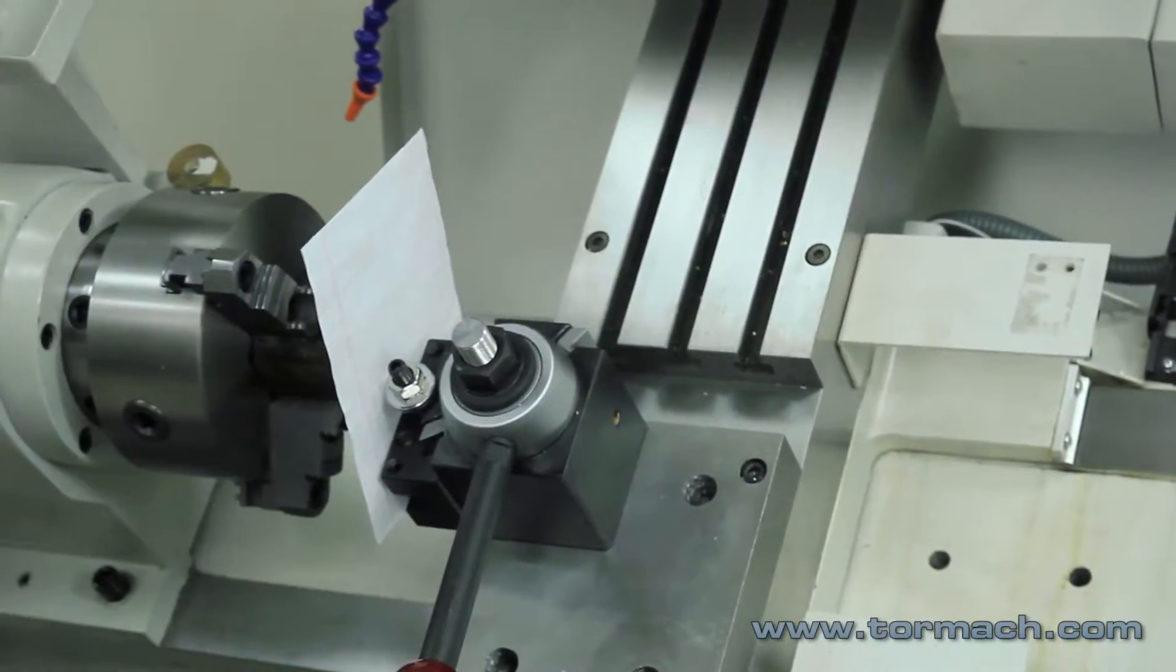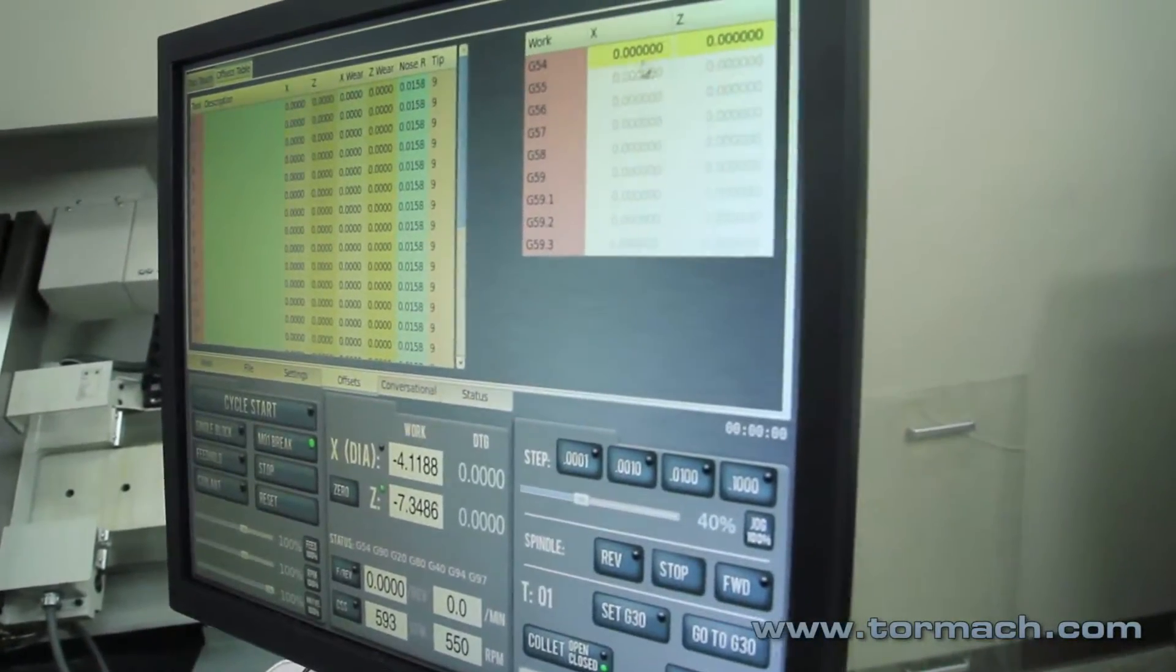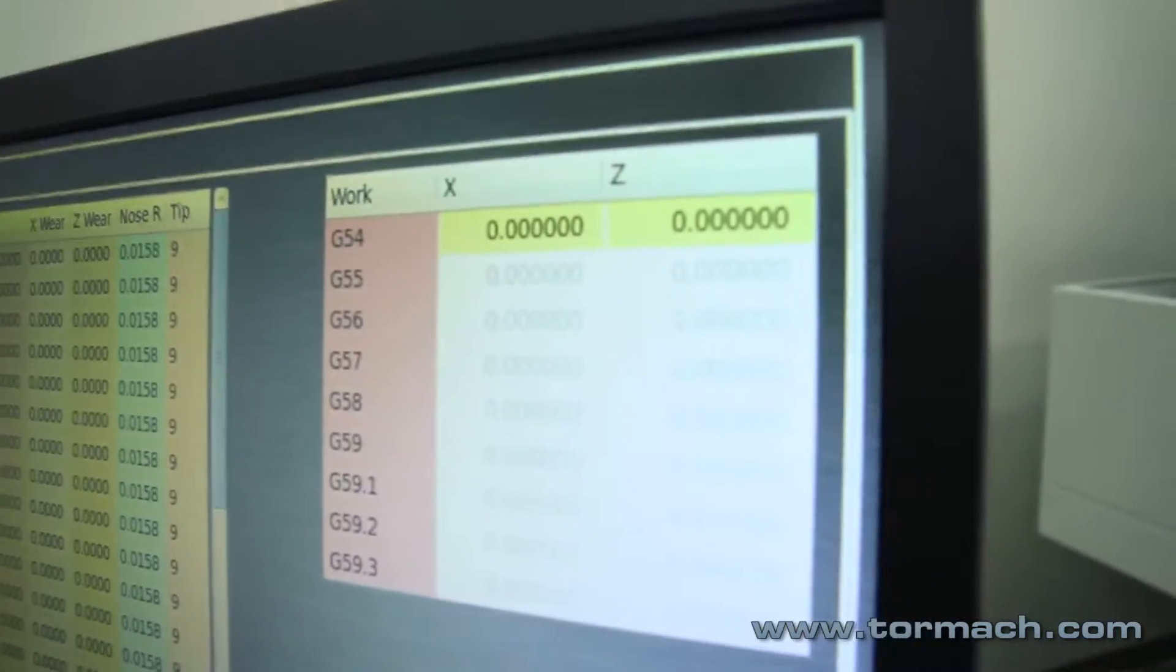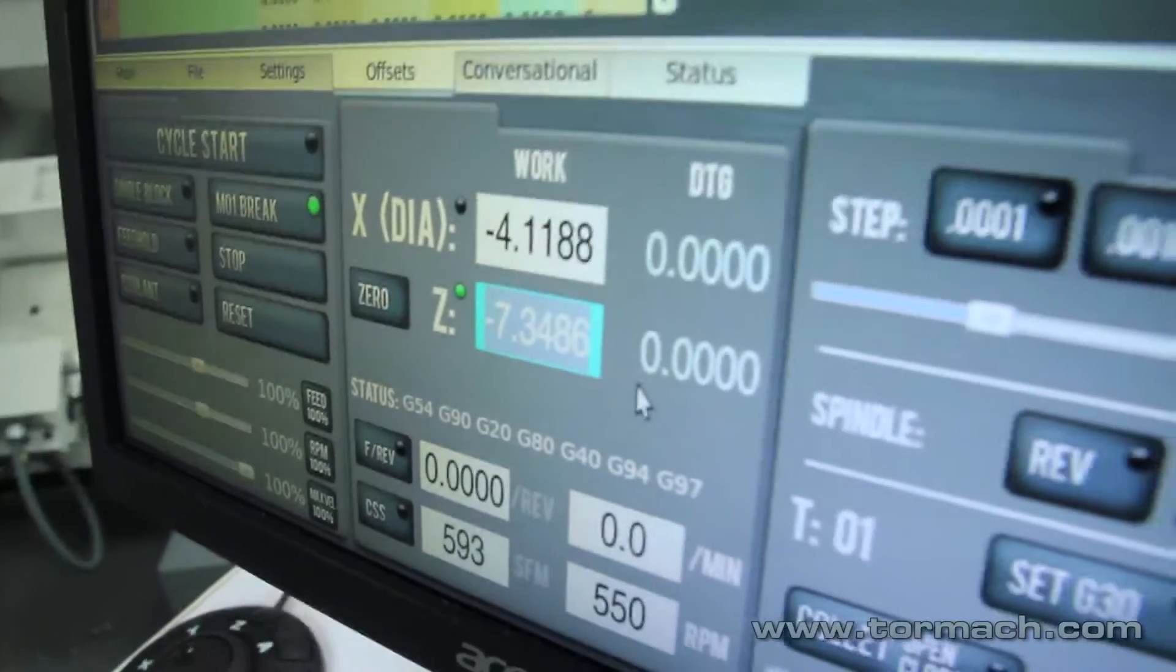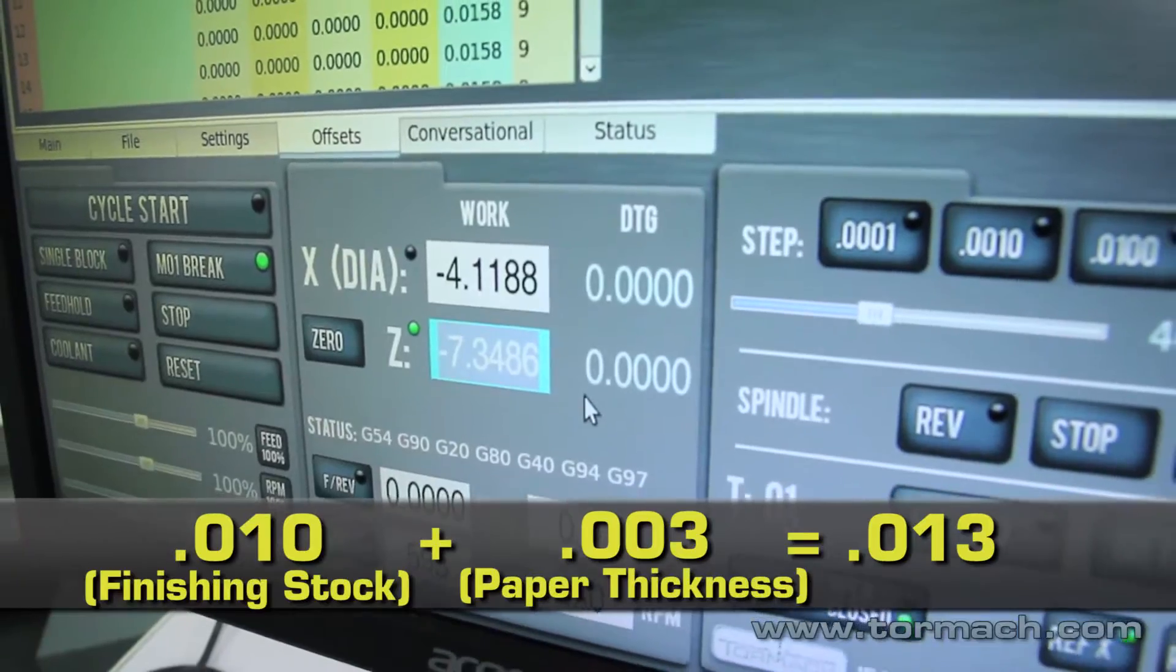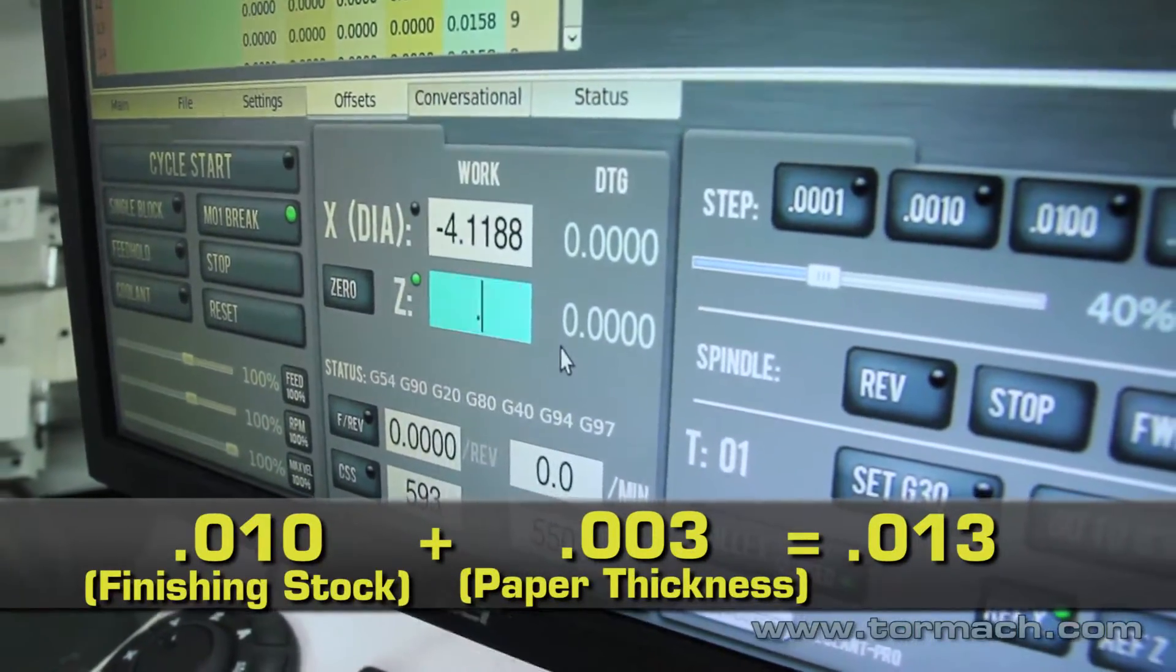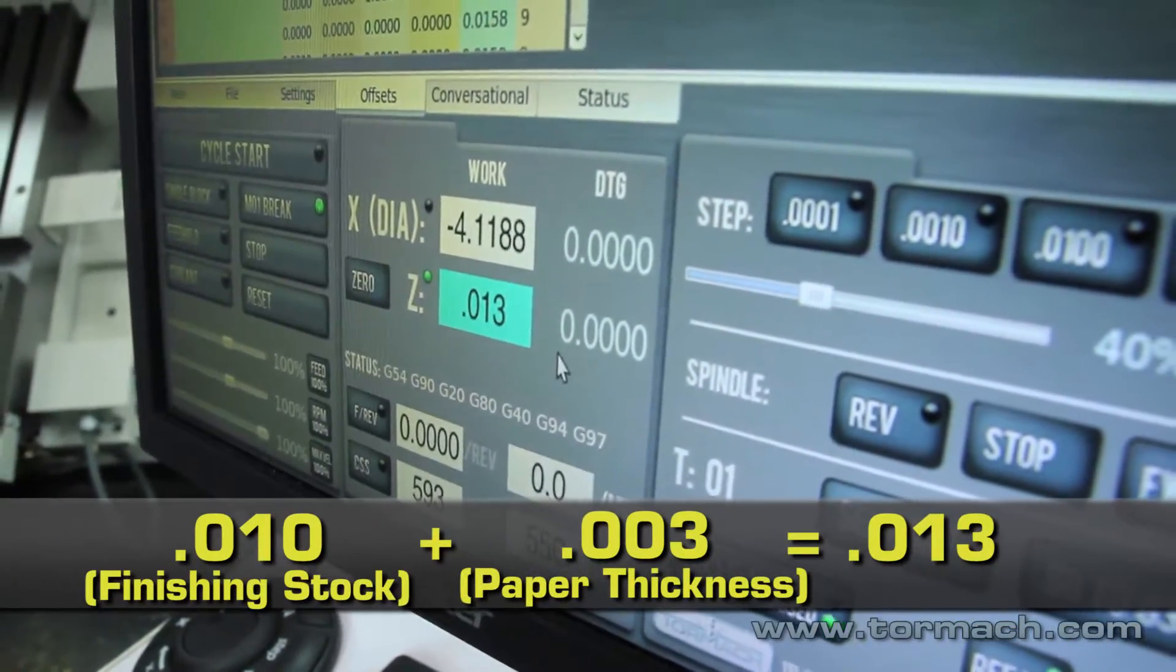Now go to the offsets page and the offset table. Right now we have nothing in here, everything's blank. Now I come down and I'm touching off my Z-axis. I'm clearing that off, and I want to include the thickness of my paper. Plus we'll say there's 10 thou finishing stock on the front of that part. So I enter 0.013 for the 10 thou plus the paper. Hit enter.